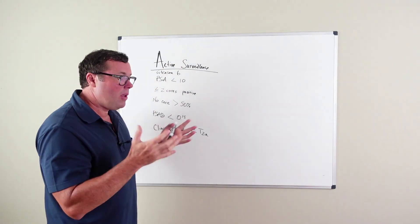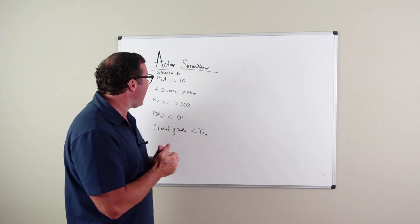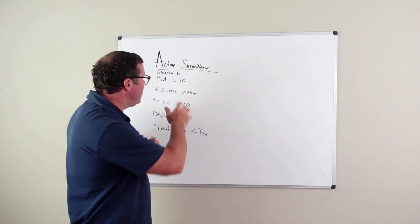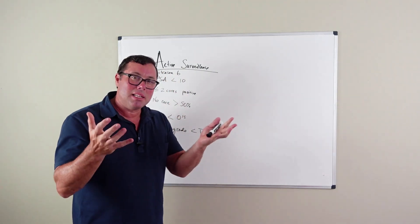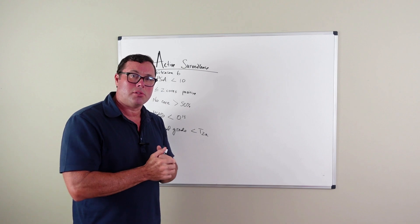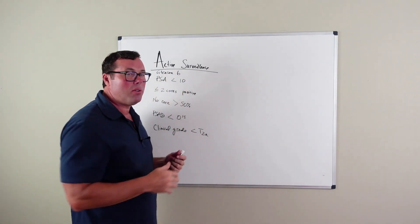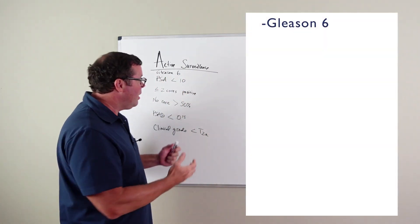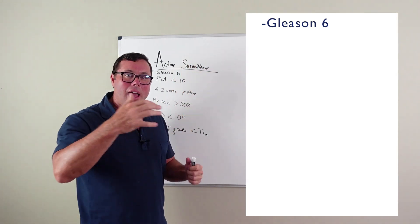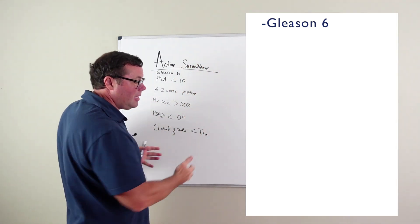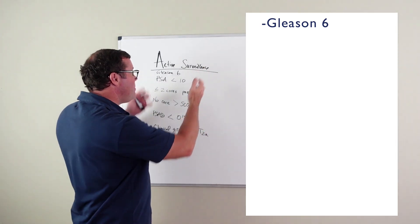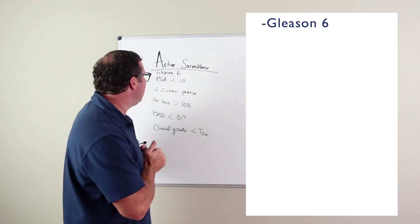The first thing for an excellent active surveillance patient is you ideally want to be dealing with low risk prostate cancer. So nothing greater than a Gleason 6. If you have a Gleason 8, 9, or 10, not that you can't do active surveillance, but you're not the best candidate for active surveillance.